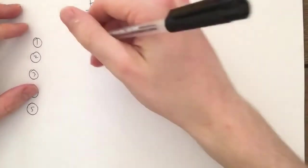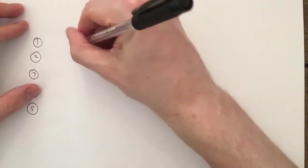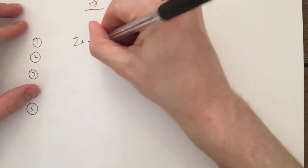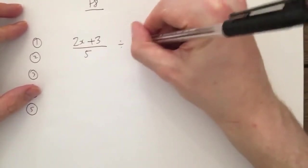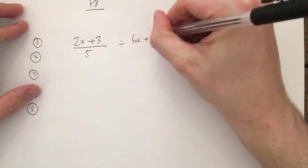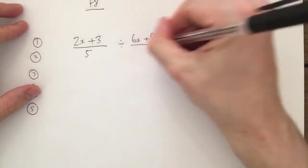Okay, the question is 2x plus 3 over 5 divided by 6x plus 9 over 10.